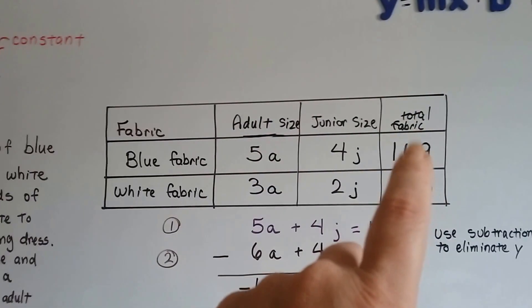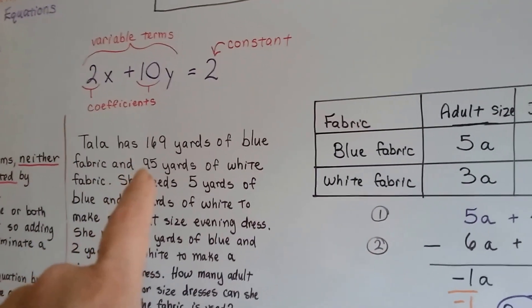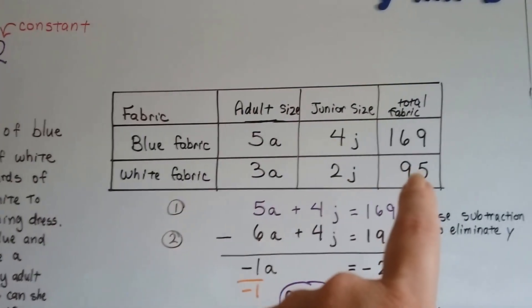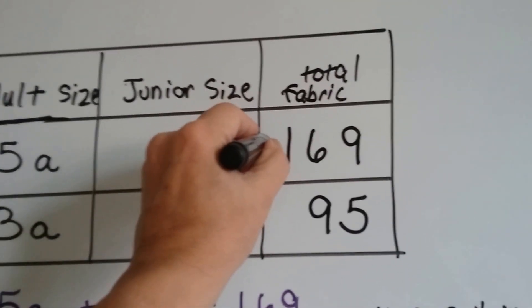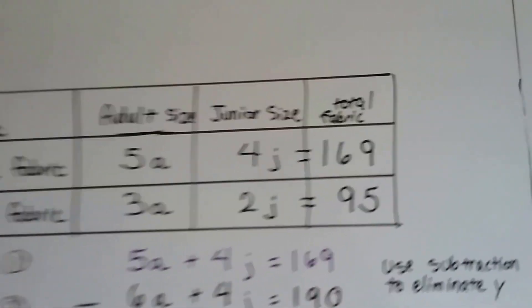At the end of the blue fabric, we put the total of 169 yards. We know she's got 95 of white, so at the end of the white one, we put the 95 because we know this is going to be our totals, our equal. So that's why we're putting them at the end.